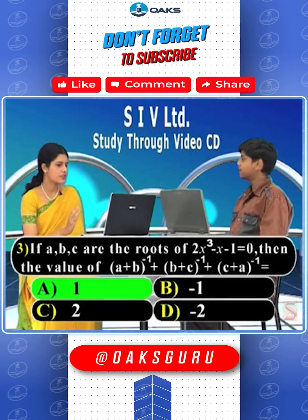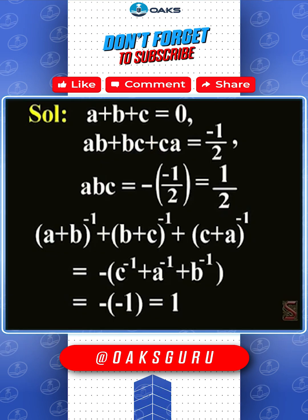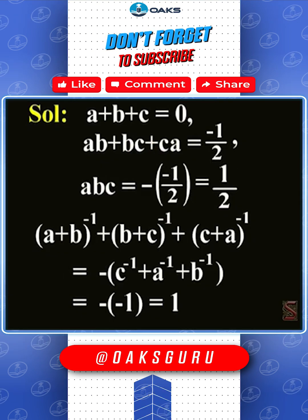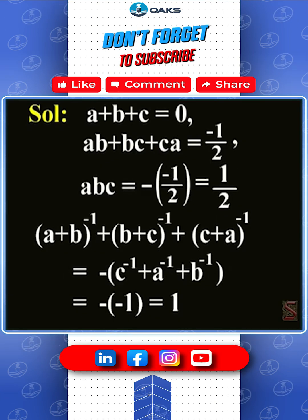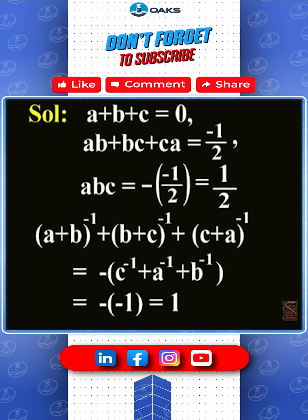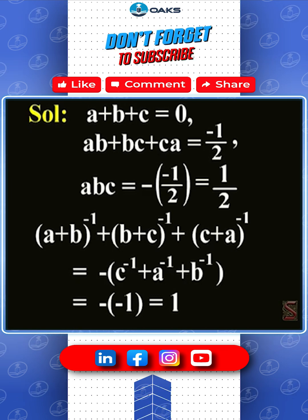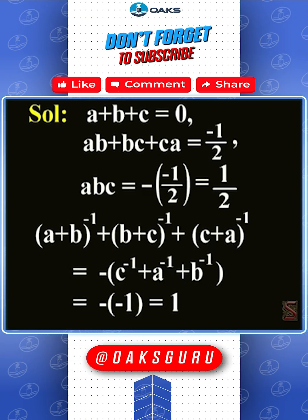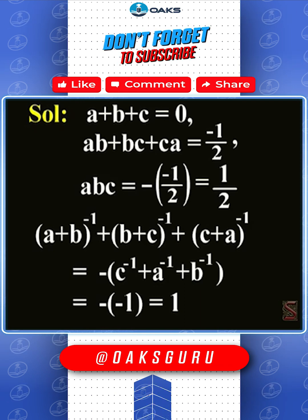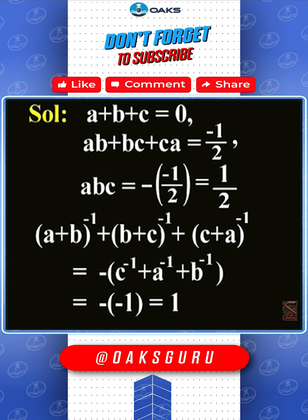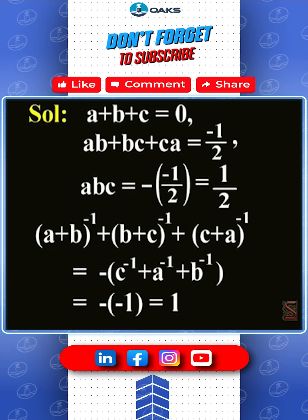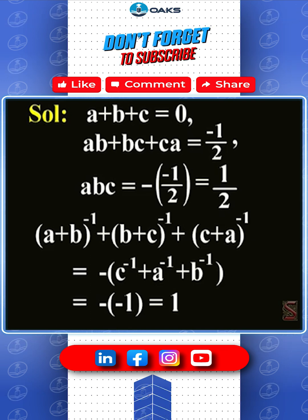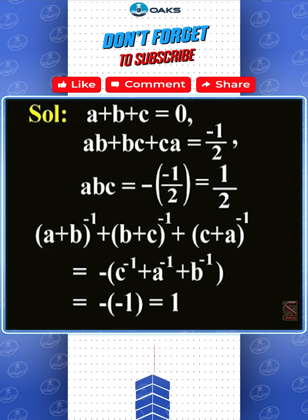The answer is option A. Using the relationship between roots and coefficients: a + b + c = 0, ab + bc + ca = -1/2, and abc = 1/2. These three equations are obtained by writing the relationship between the roots and the coefficients.